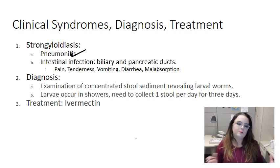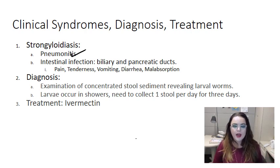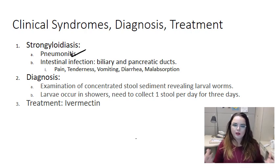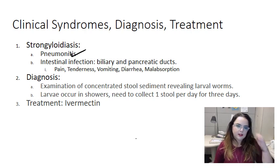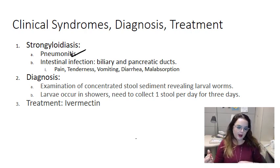The symptoms can include pain, tenderness, vomiting, and diarrhea. The diarrhea is usually bloody in this case, and malabsorption. Sometimes it's hard to diagnose because it tends to look a little bit like peptic ulcer disease, so it could be on your differential for some sort of peptic issue, even though it's actually a parasite.